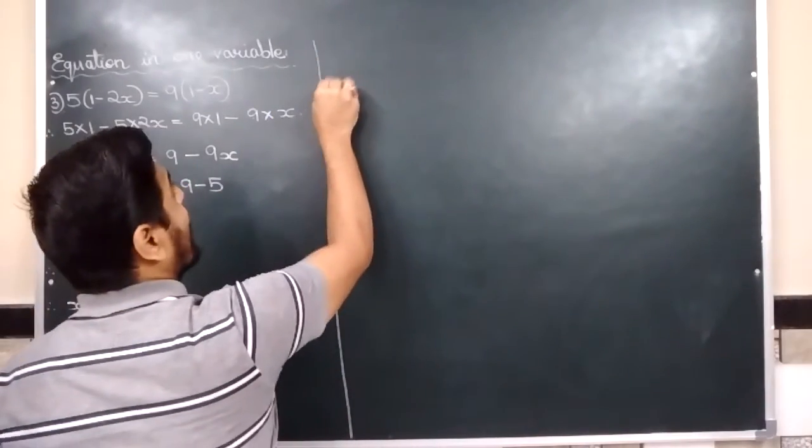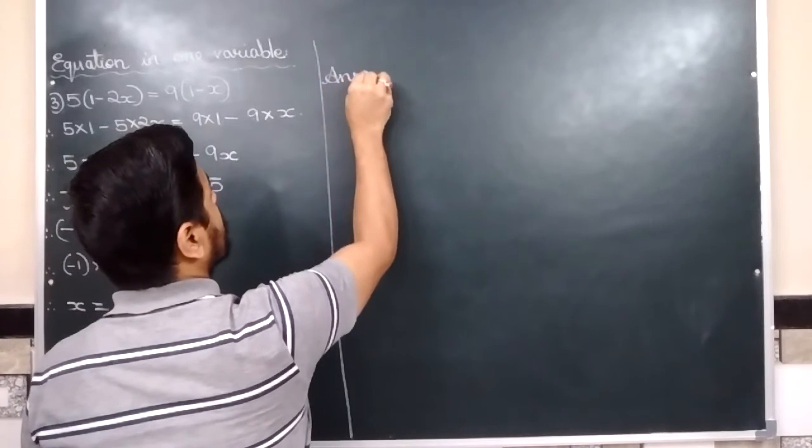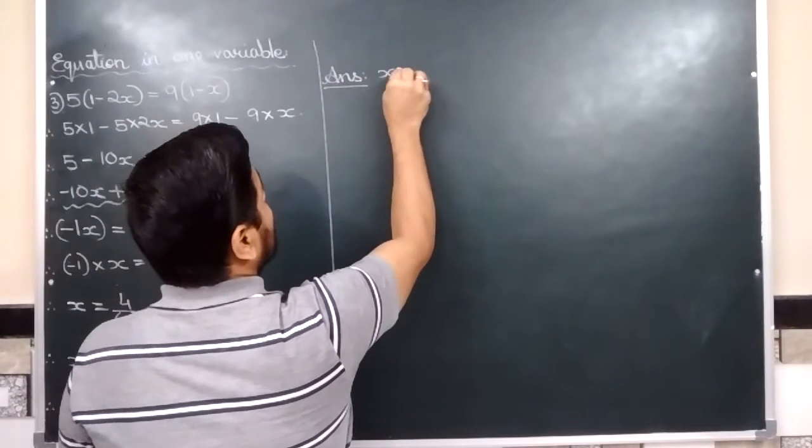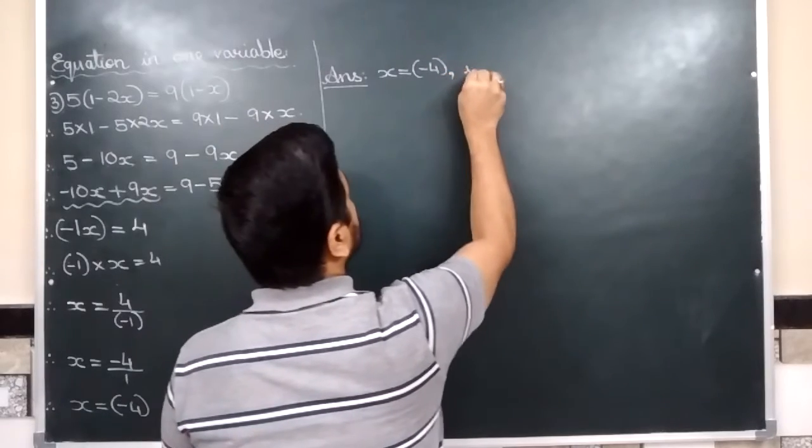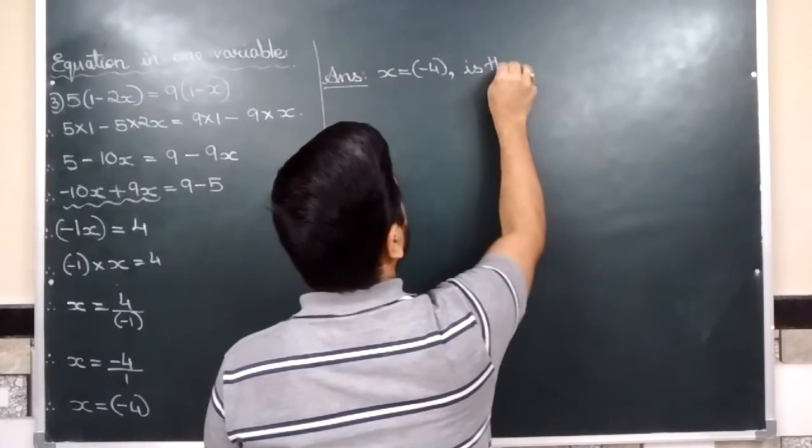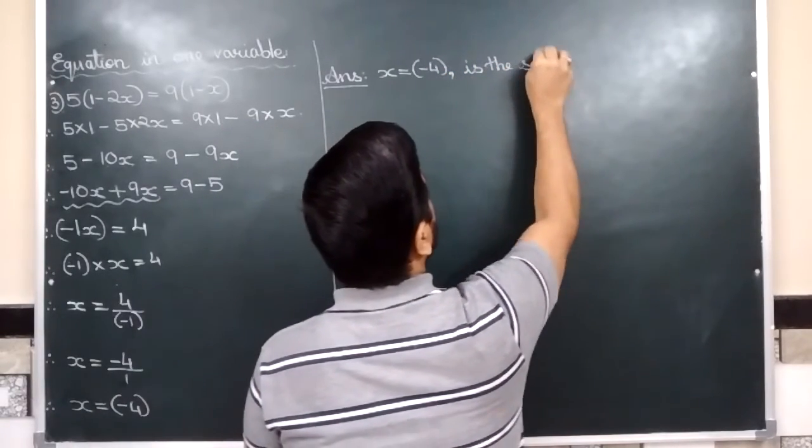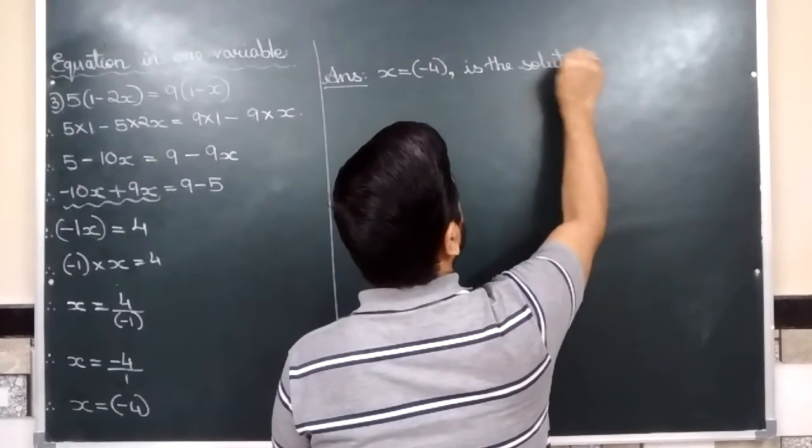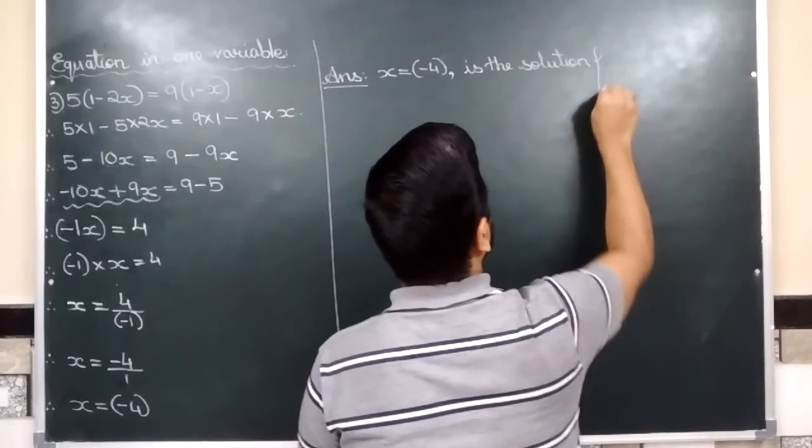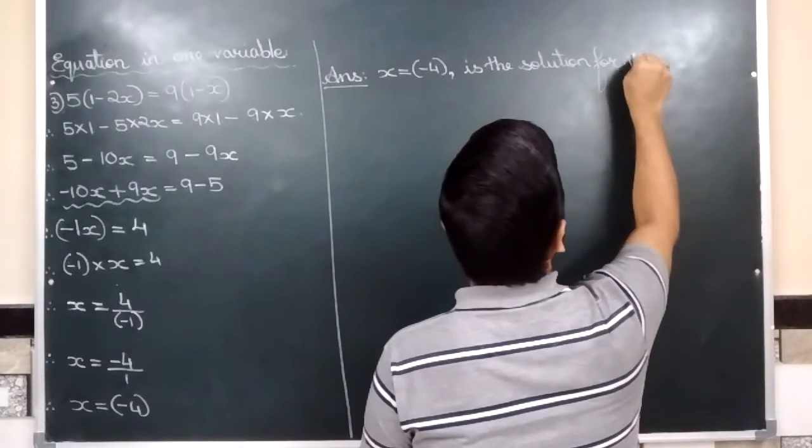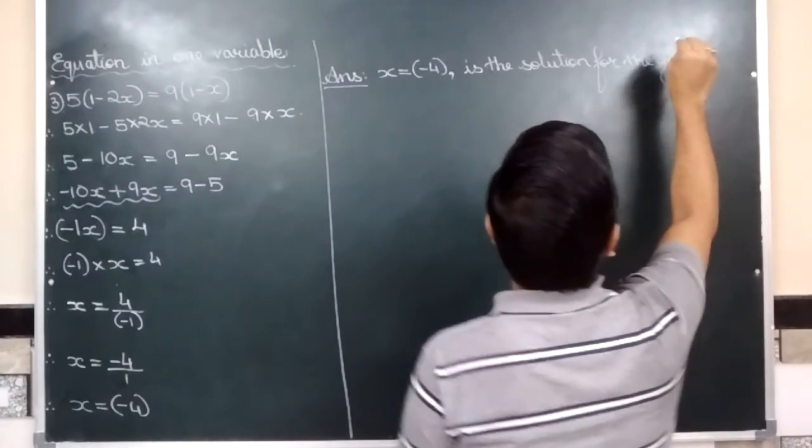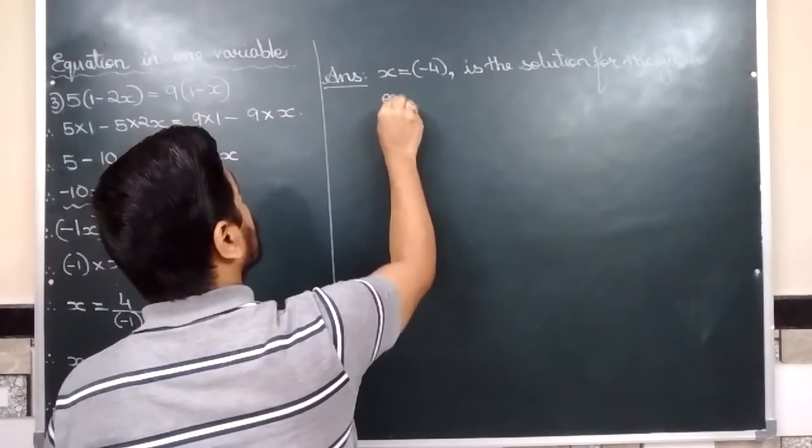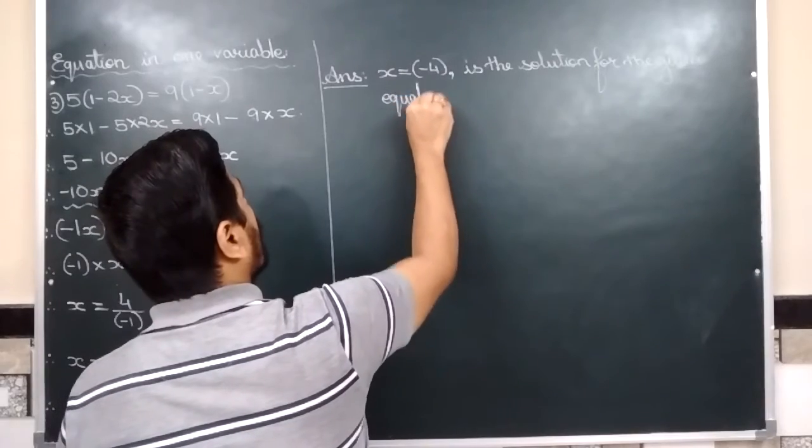You will leave a line and write answer. X is equals to negative 4 is the solution for the given equation.